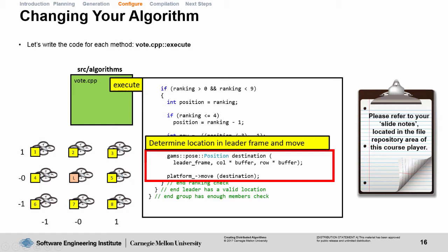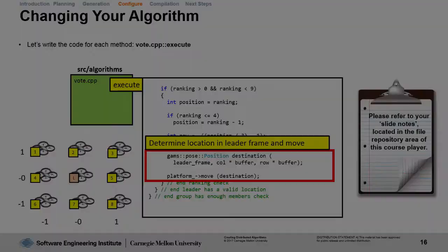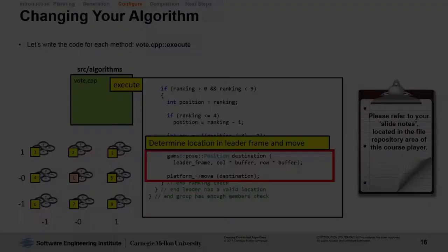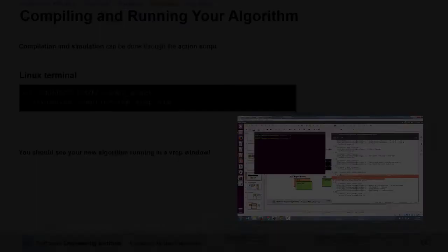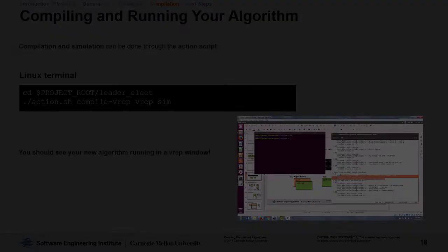Believe it or not, that's all you have to implement to have your own vote algorithm. The fourth thing we do to GPC is we specify a group of group.allies, which will include all the agents we've created. The last thing we do is set the GAMS debug levels to 3 and the MADARA debug levels to 1. Compilation of this new algorithm can be done through the action.sh script that you generate when you create a new project with GPC.pl.